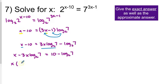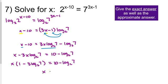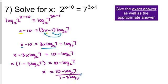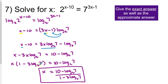When you factor x out of both terms, you're left with 1 for the first term and minus 3 log base 2 of 7 for the other. Once you get that step, all you have to do is divide to get x by itself. So we have x equals 10 minus log base 2 of 7, over 1 minus 3 log base 2 of 7. That's the exact answer. It would look different if you chose log base 7 from the beginning — equivalent, but different looking.